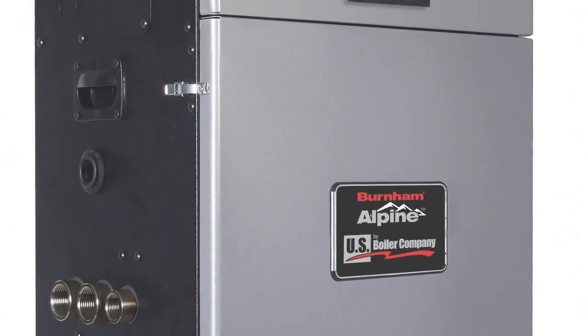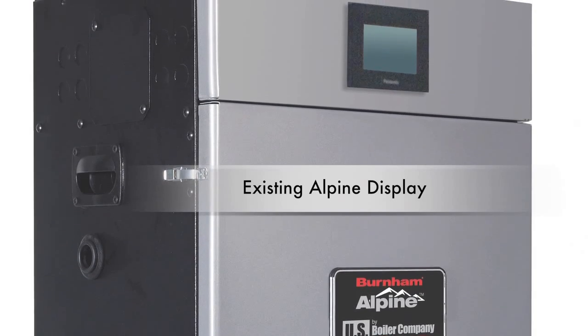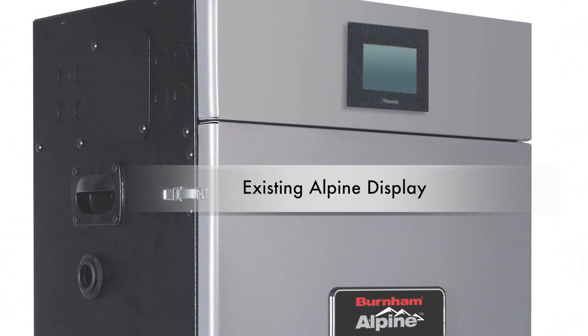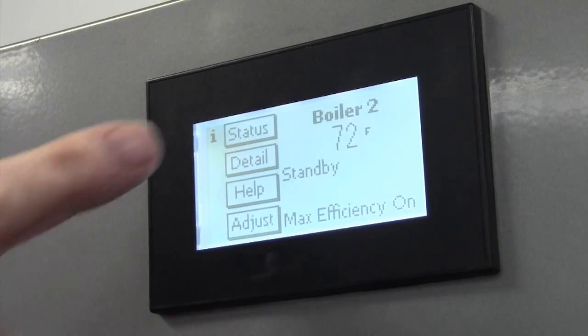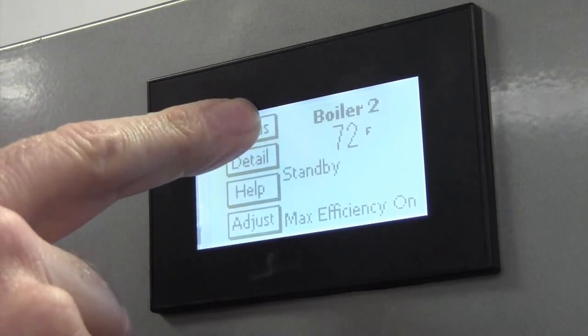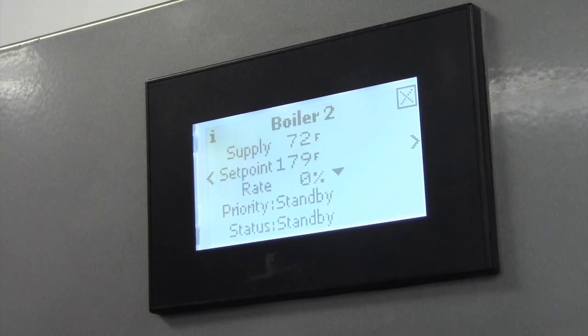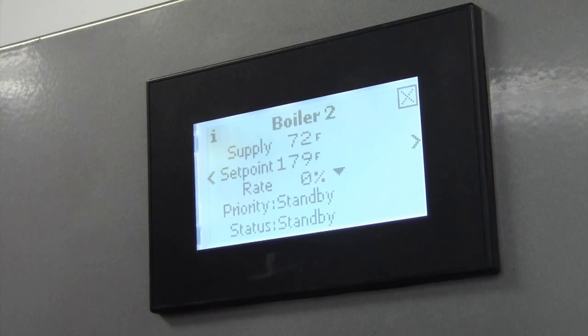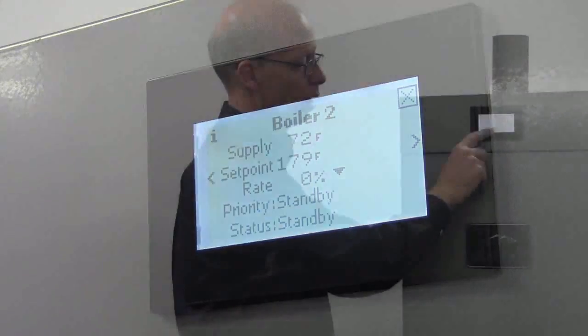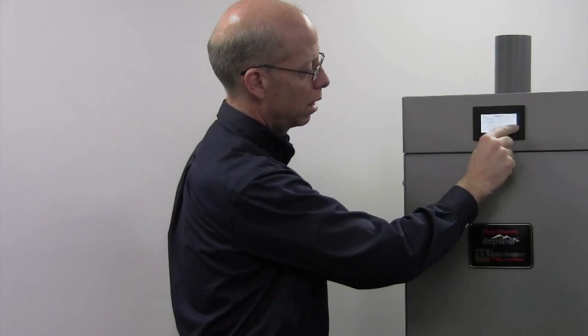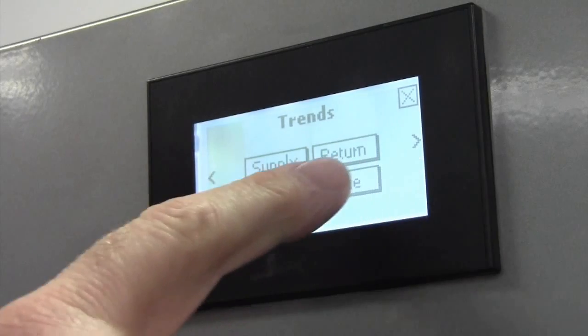To begin our discussion, I'm going to point out some features of our existing Alpine boiler. This is the Alpine's existing display. It's an intuitive display that gives you an overview of what your firing is doing. Here we have a set point, a supply temperature, and it gives you the firing rate and what we're firing to.